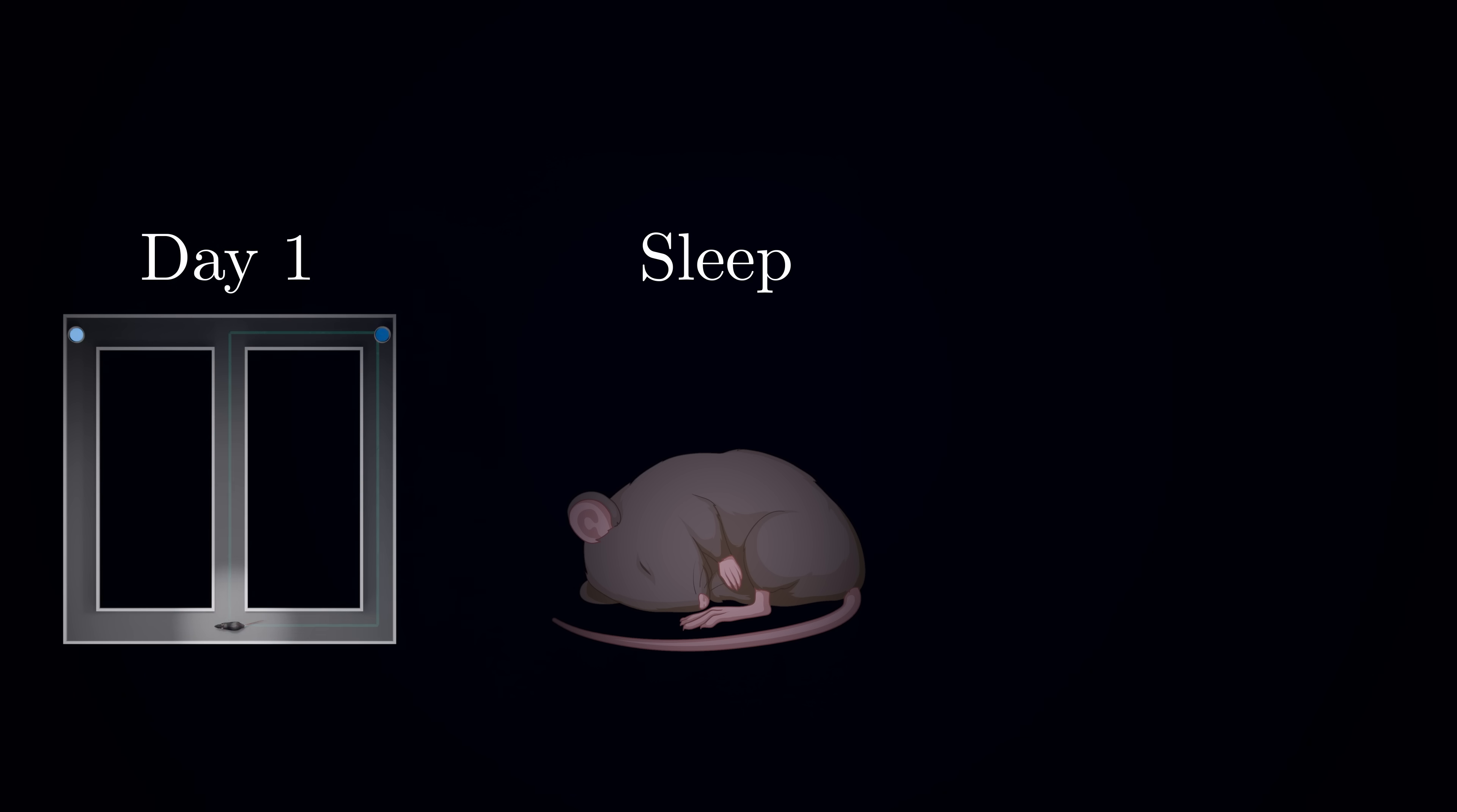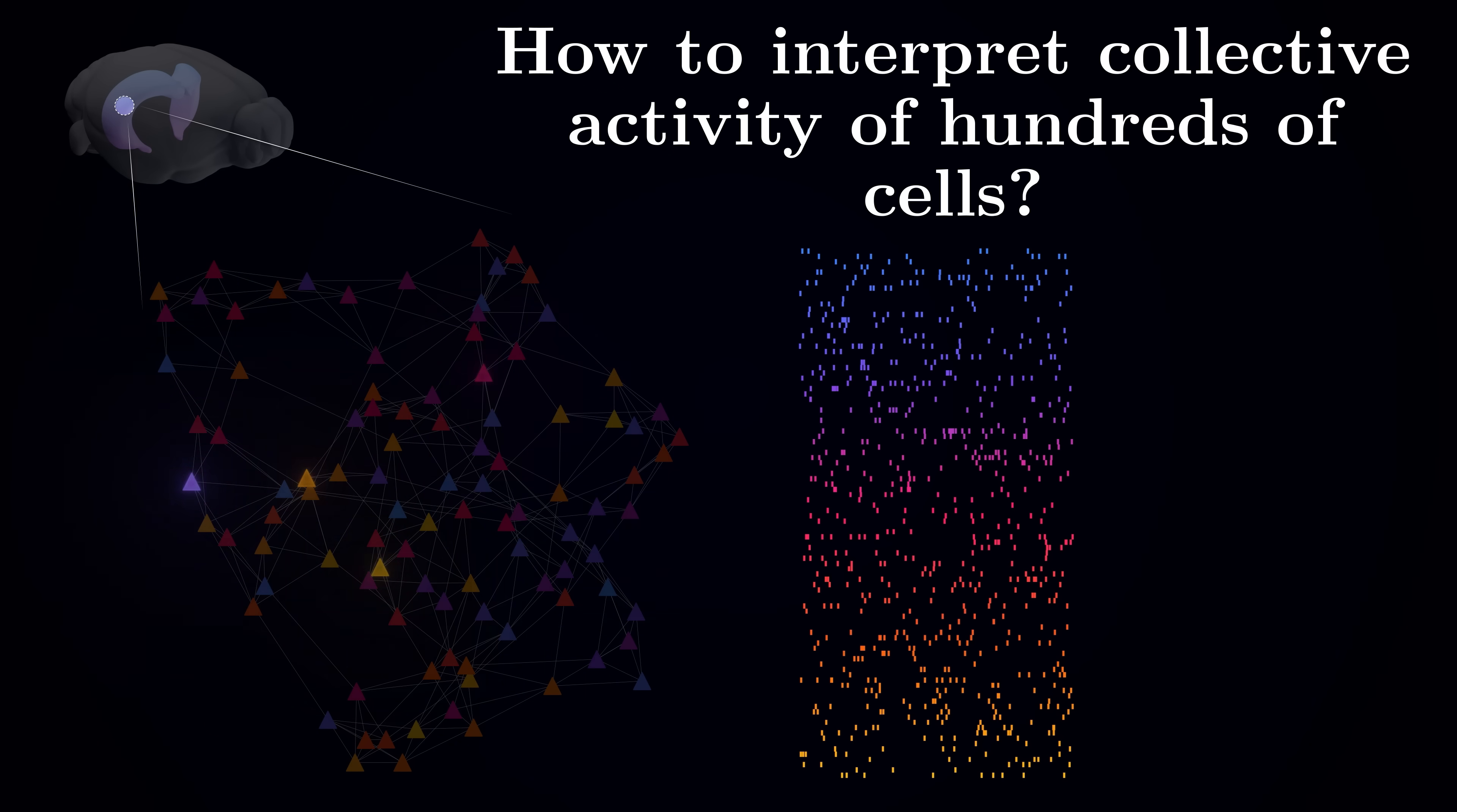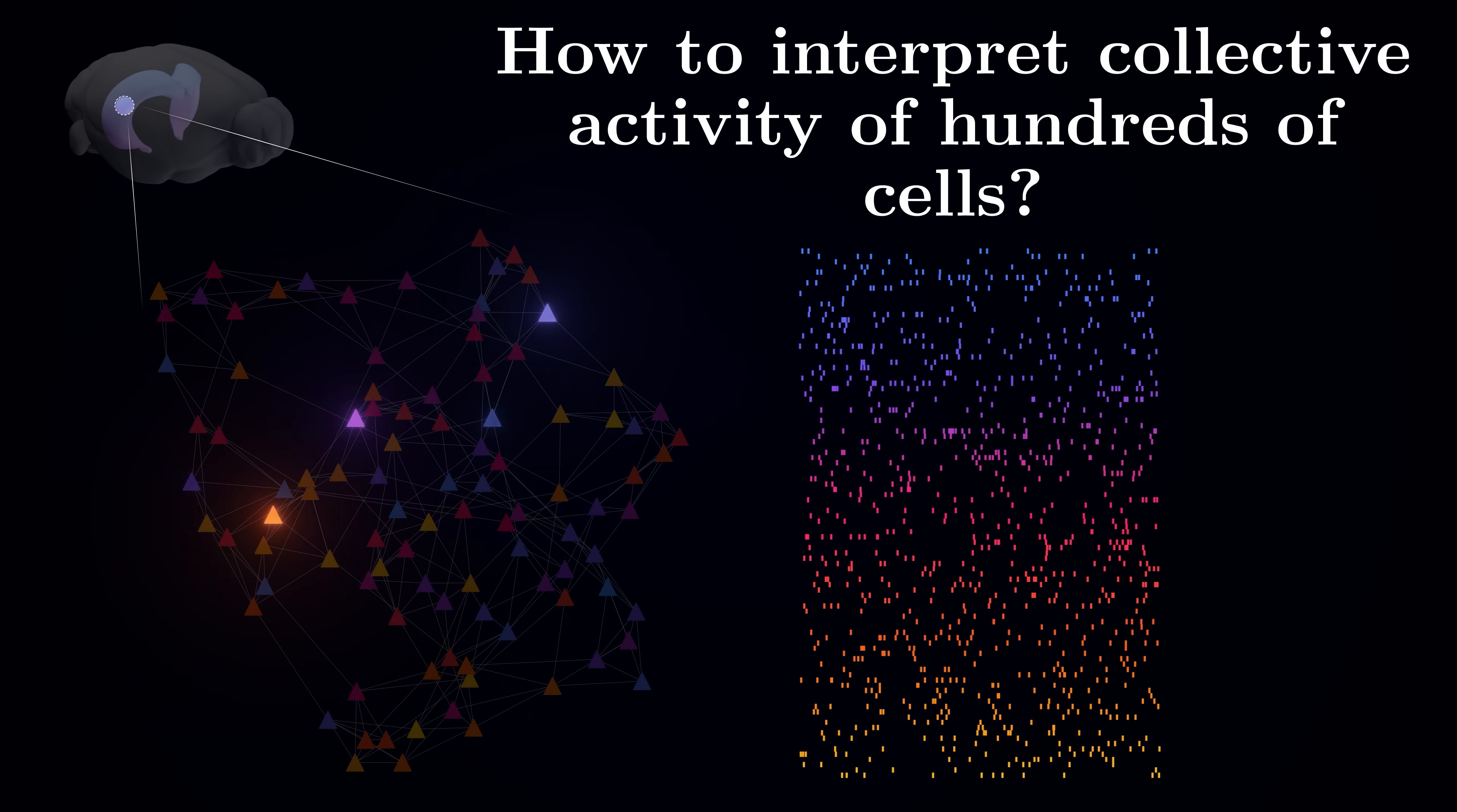Each day, mice would run trials, sleep, and return the next day to try again, gradually getting better at the task. But this raised a new challenge. How do you make sense of the activity patterns from hundreds of neurons? When you are recording from 400 neurons simultaneously, each moment creates a complex symphony of neural firing that is impossible to interpret by eye.